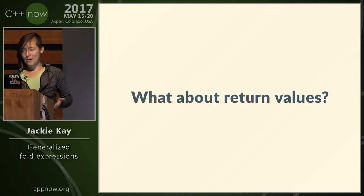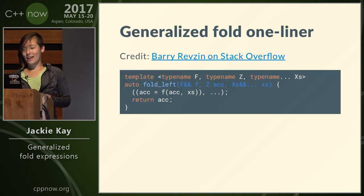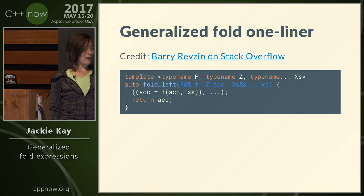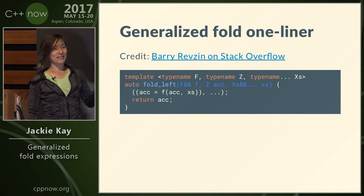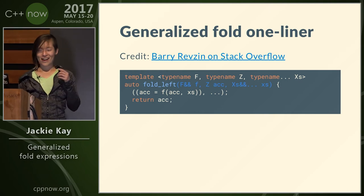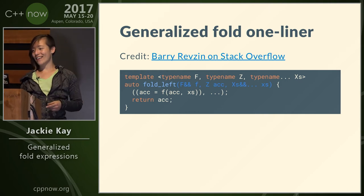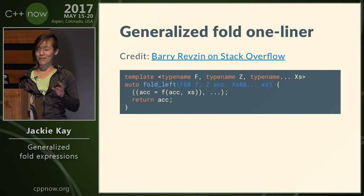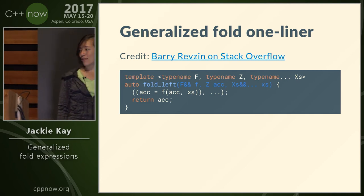But the problem with using the comma operator is you can't do anything with the return type. So what do we do about that? Well, Barry Revzin answered this question on Stack Overflow — a really awesome one-liner, or a few liners, that essentially reduces to a one-liner.